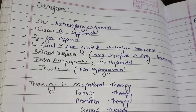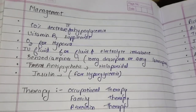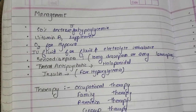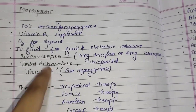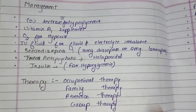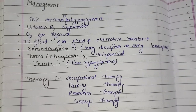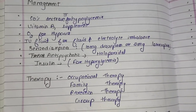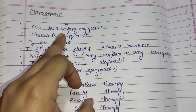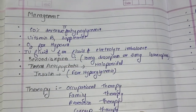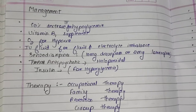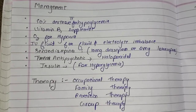Next we will study about management of delirium — how delirium can be managed and treated. The first intervention is 50% dextrose for hypoglycemia. When hypoglycemia occurs, meaning the blood sugar level in the body decreases, the person can be given 50% dextrose.